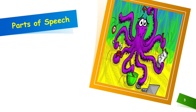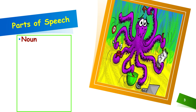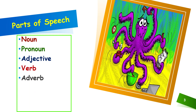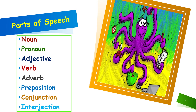Let us have a look at what they are: noun, pronoun, adjective, verb, adverb, preposition, conjunction, and interjection. These are the eight parts of speech and I am going to tell you what they are now.